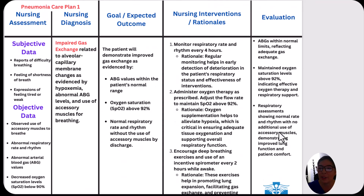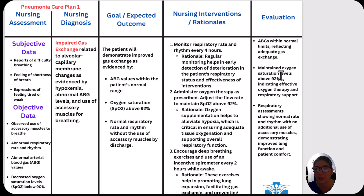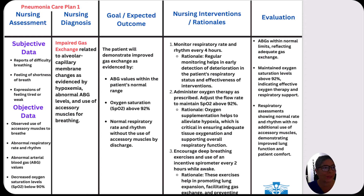Our evaluation should match our expected outcome: ABGs are within normal limits reflecting adequate gas exchange, they maintain an oxygen level above 92% indicating effective oxygen therapy, and respiratory assessments show normal rate and rhythm with no additional use of accessory muscles. That's our first nursing care plan.